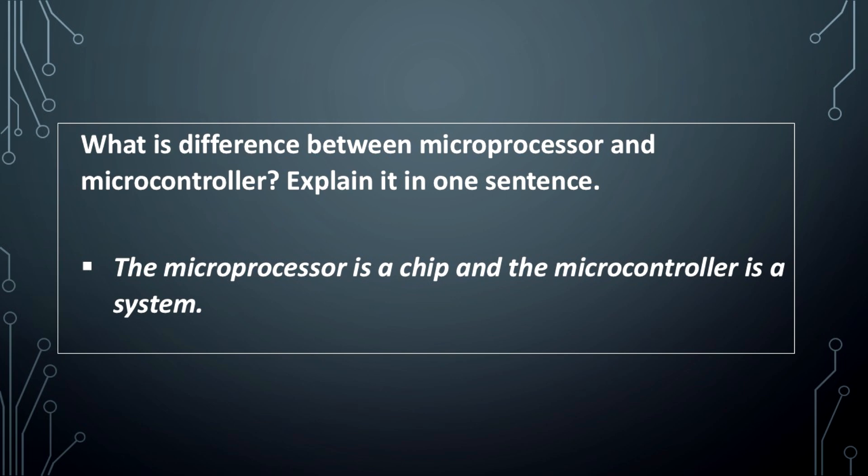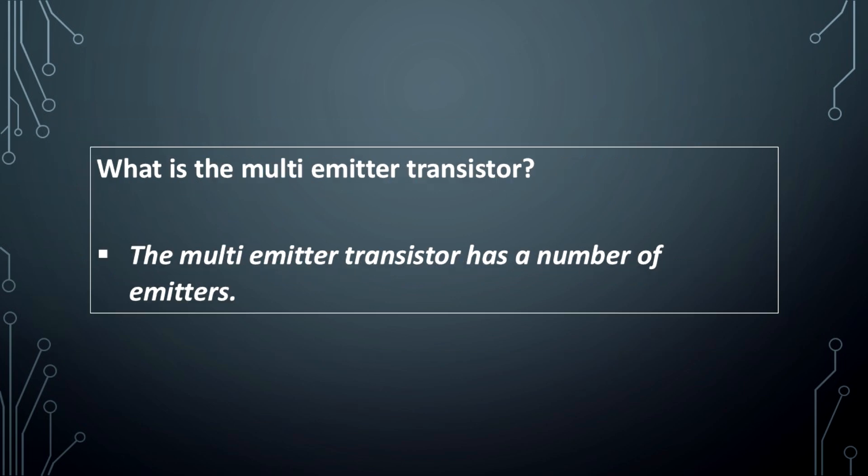What is the difference between a microprocessor and a microcontroller? Explain it in one sentence: the microprocessor is a chip and the microcontroller is a system.